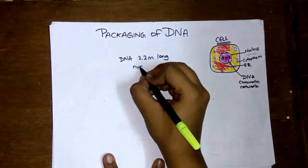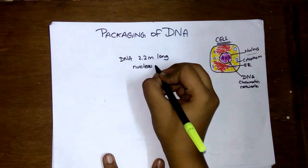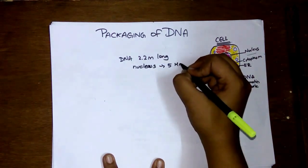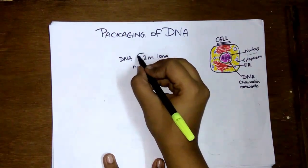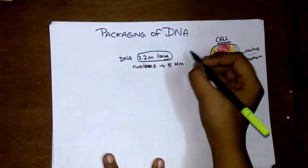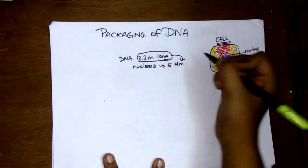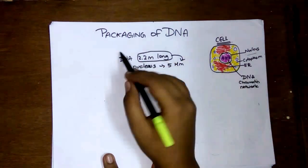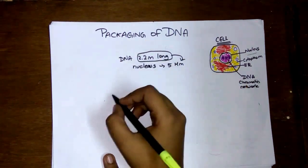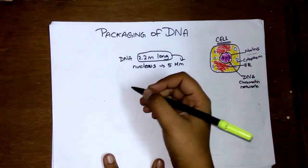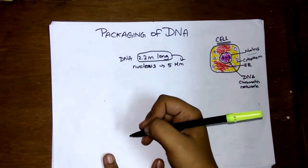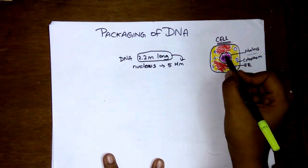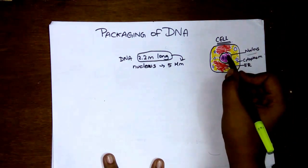The nucleus is only around 5 micrometers in diameter. So how does a 2.2 meter long DNA fit inside a nucleus that's only 5 micrometers in diameter? This happens because of packaging of DNA, and when you're packaging DNA it goes through a lot of steps from this very dense chromatin material which is what I've depicted in this pink color.